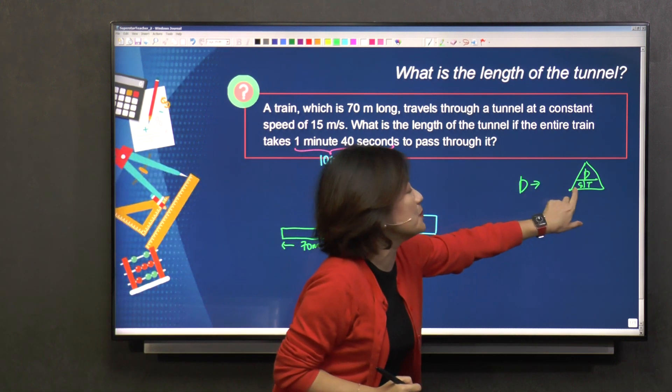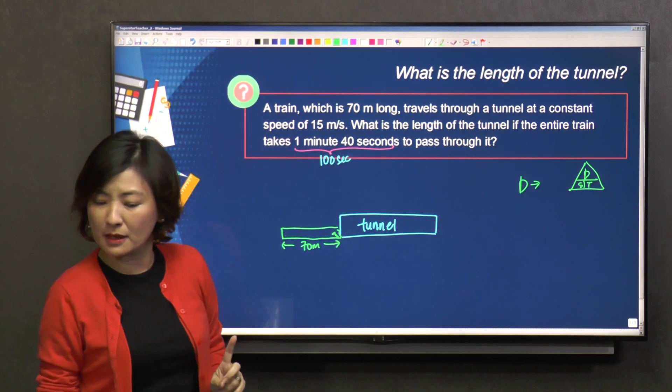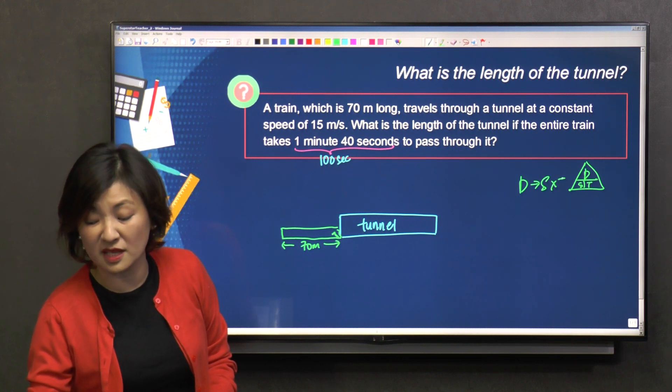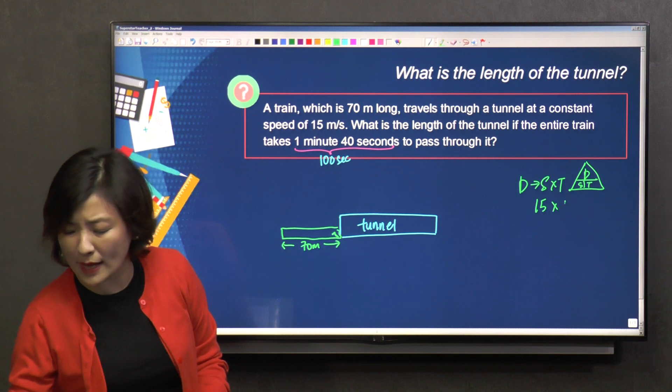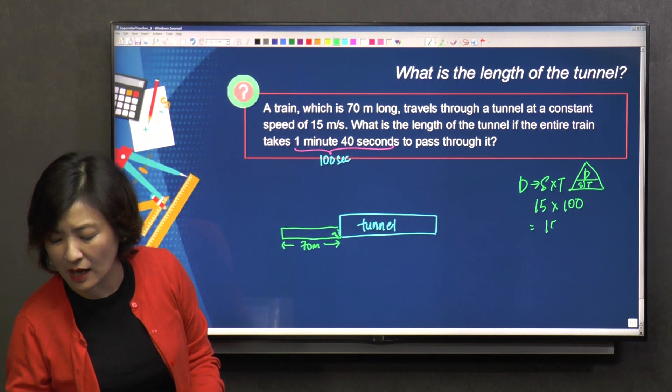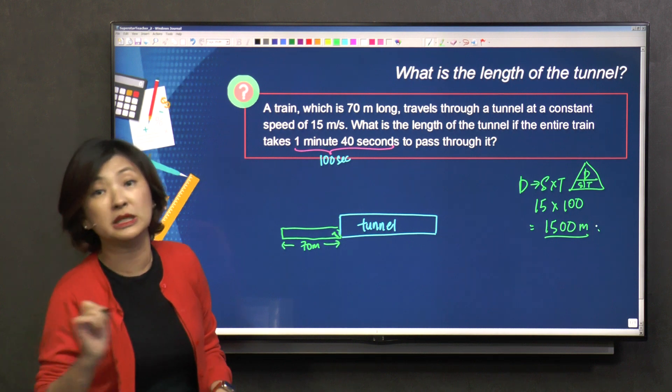So I'm looking for distance, it's speed times time. So I have a speed. The speed is... speed times time, just in case you're lost. So speed is 15, and then the time is 100. Ha-ha, ta-da! The answer is 1,500 meters.